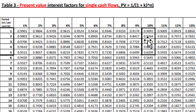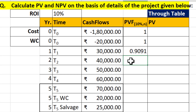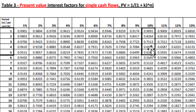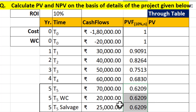Second year के अंदर value है 0.8264, third year के अंदर value है 0.7513। Fourth year और fifth year की values 10% rate of interest के उपर 0.6830 and 0.6209 हैं। मैं इन values को यहाँ पर दे रहा हूँ, और fifth year की value को नीचे drag कर देता हूँ।